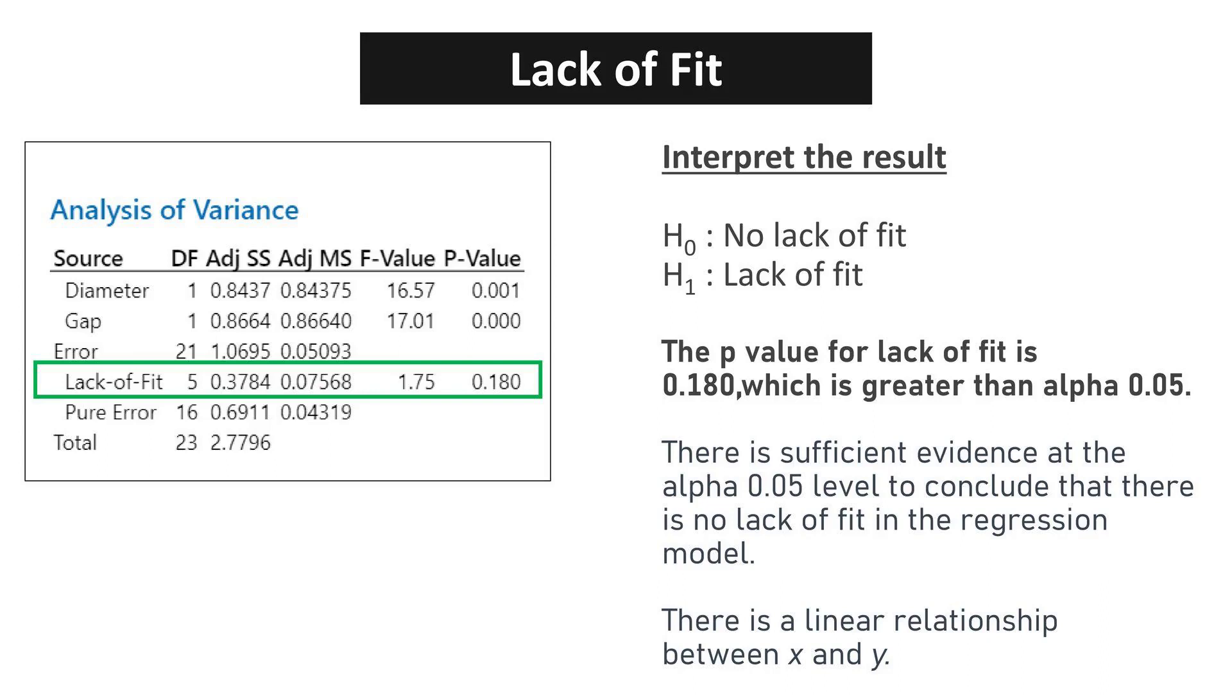A high p-value in lack-of-fit tests reassures that the model captures the relationship between variables accurately, without overfitting. There is sufficient evidence at the alpha 0.05 level to conclude that there is no lack-of-fit in the regression model. There is a linear relationship between x and y.